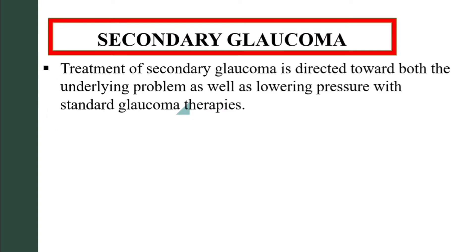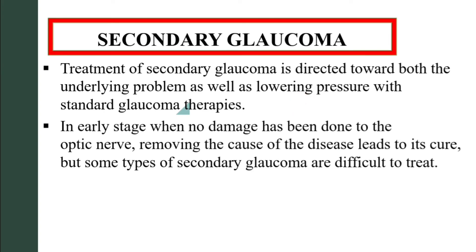Treatment of secondary glaucoma is directed towards both the underlying problem as well as lowering the intraocular pressure with the standard glaucoma therapies. In early stages when no damage has been done to the optic nerve, removing the cause of the disease leads to its cure, but some types of secondary glaucoma are difficult to treat.